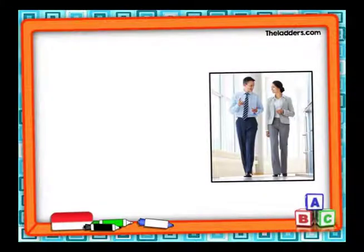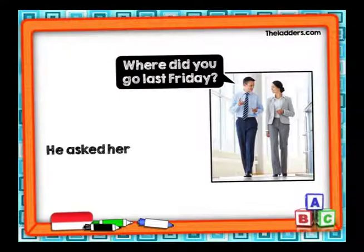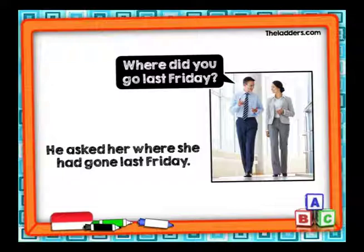Siguiente ejemplo: 'Where did you go last Friday?' ¿Dónde fuiste el viernes anterior? ¿Cómo lo hacemos con reported speech? He asked her where she had gone last Friday. La pregunta está en pasado y para contarla lo hacemos en pasado perfecto. Él le preguntó a ella dónde ella se había ido el viernes anterior.